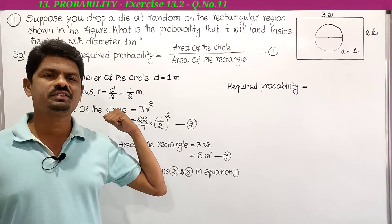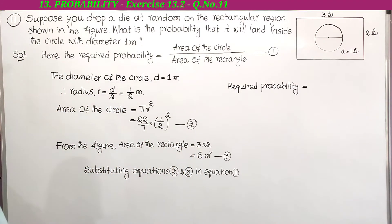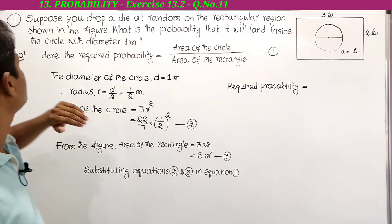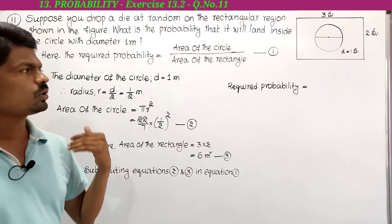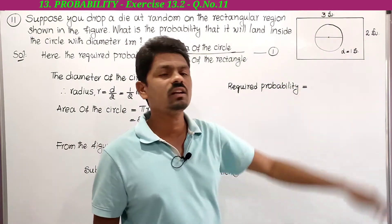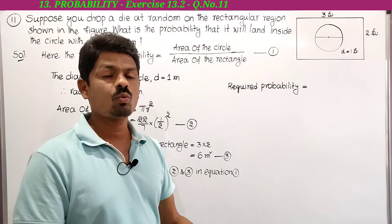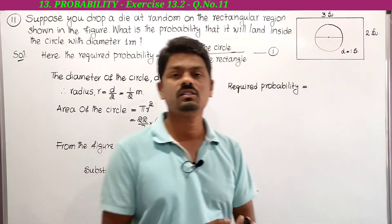This is the 11th problem in exercise 13.2. Suppose you drop a die at random on the rectangular region shown in the figure — what is the probability that it will land inside the circle with diameter 1 meter? He has given a rectangular region with a circular region inside it, and we need to find the probability that the die lands on the circular region.